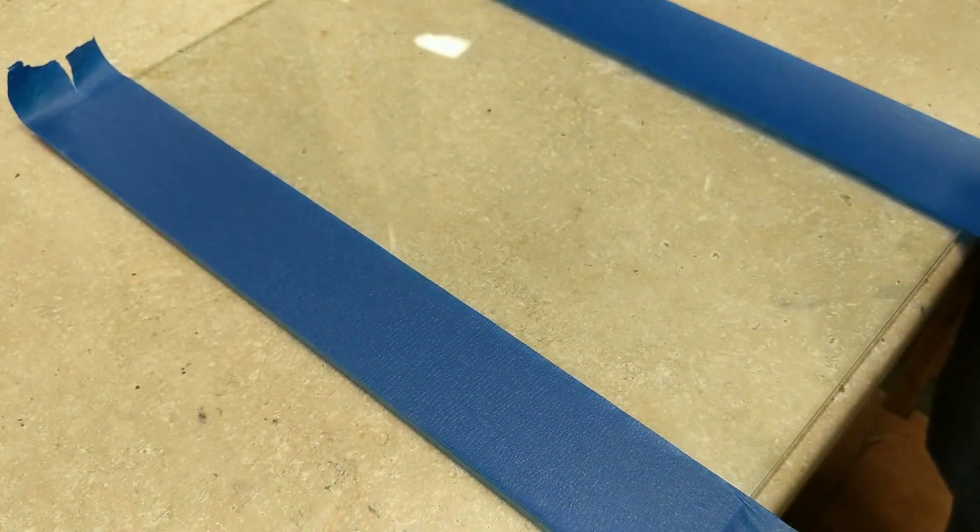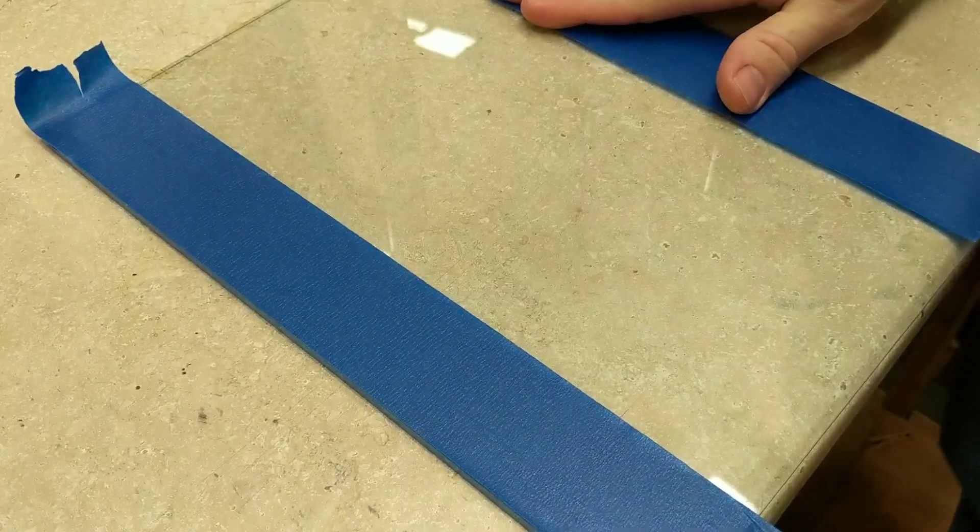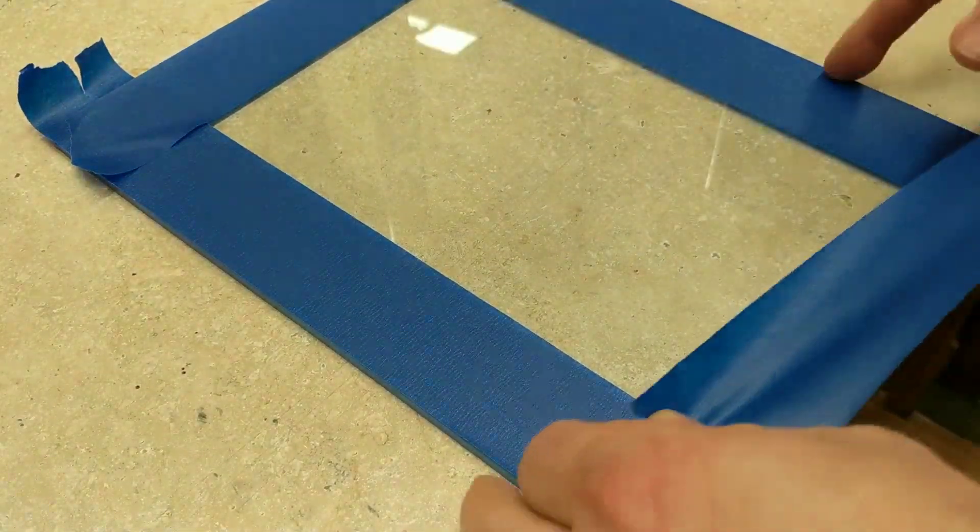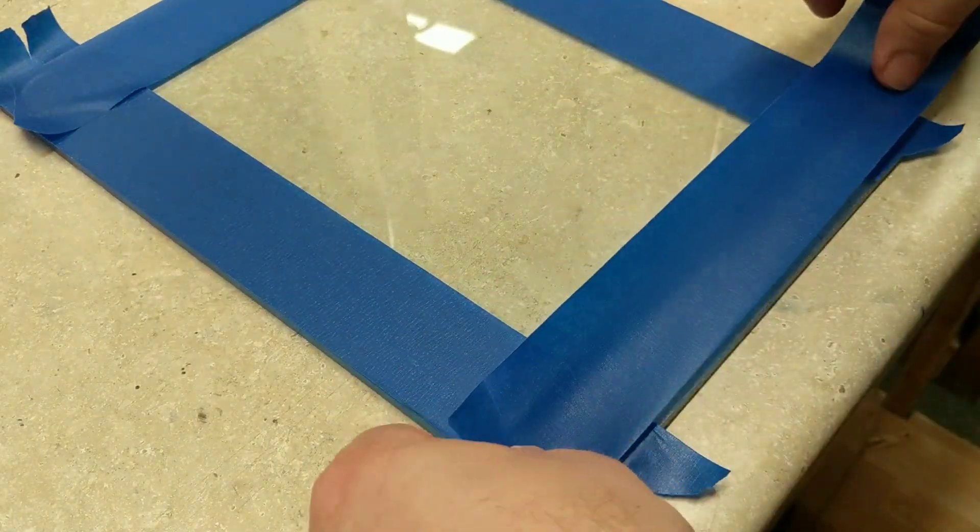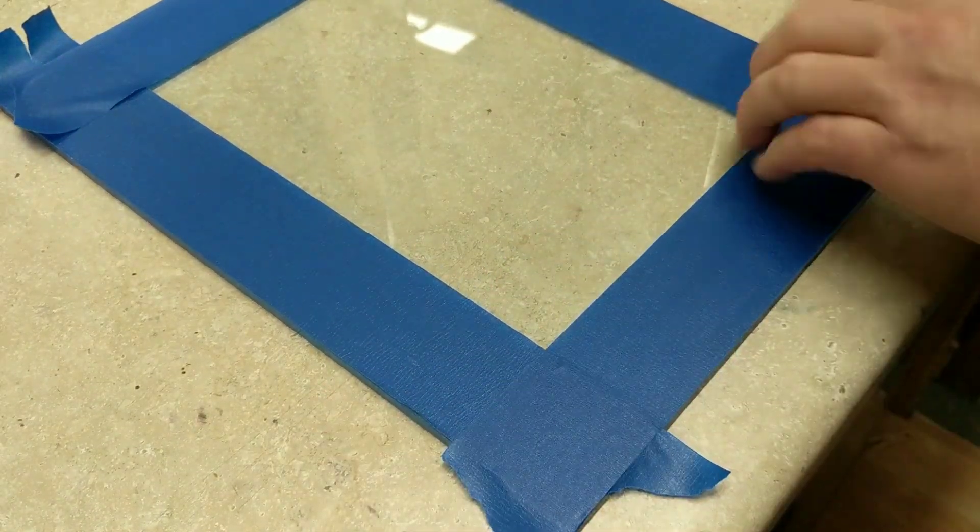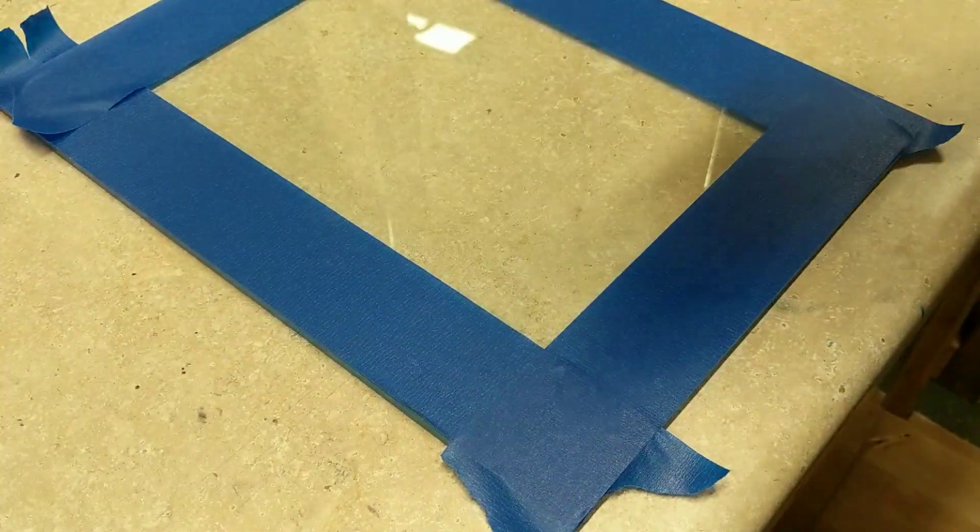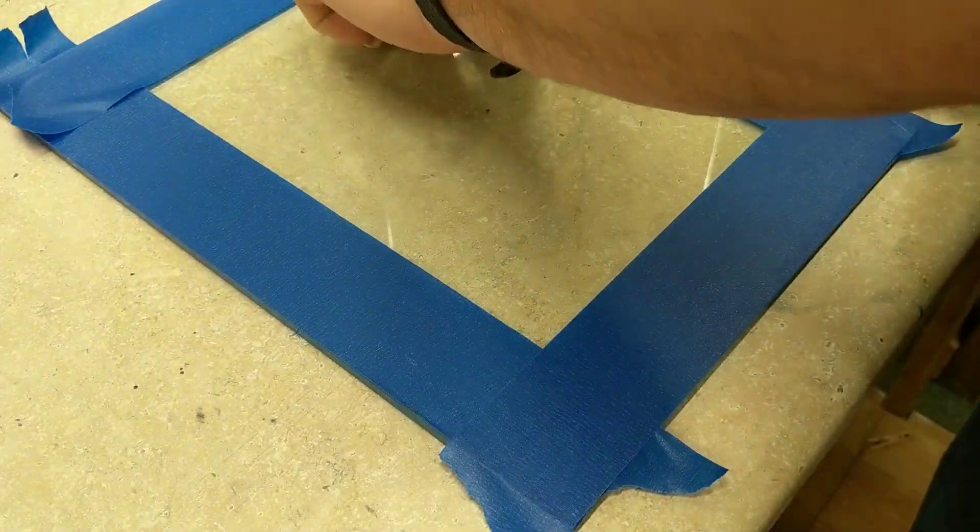I'm now taping off the edges of this piece of glass because I'm just going to use the middle of it. I'm going to use the glass itself as a registration to line my paper up, which is not totally necessary, but it does help me get the image in the middle of the piece of paper.